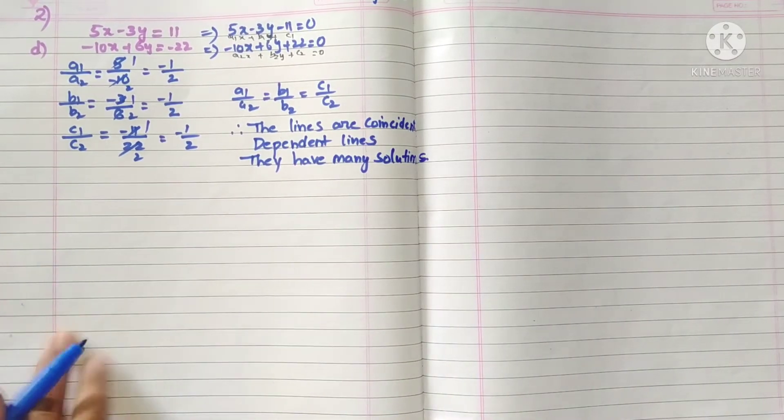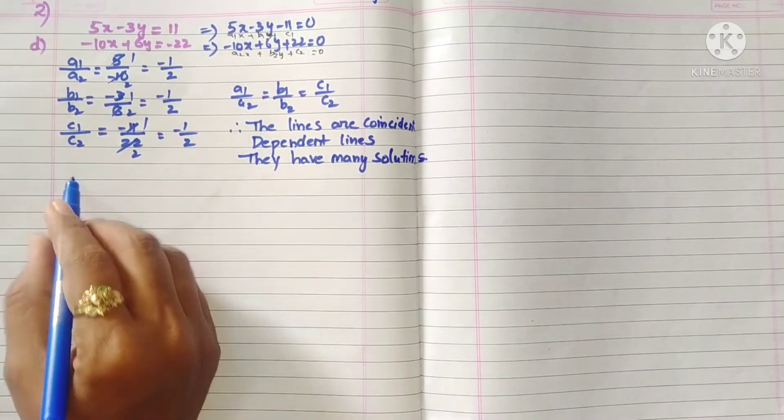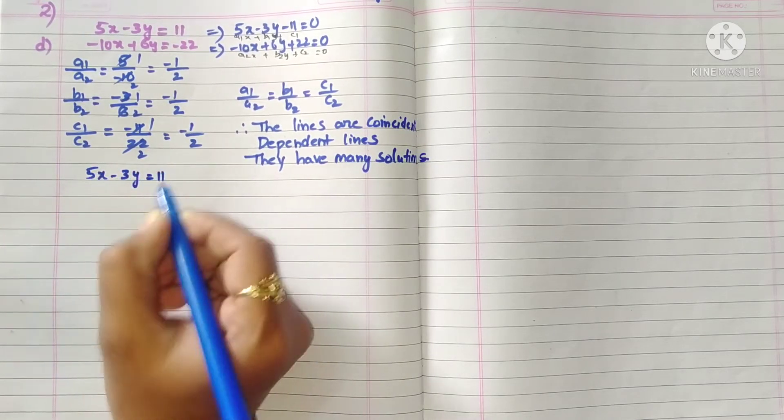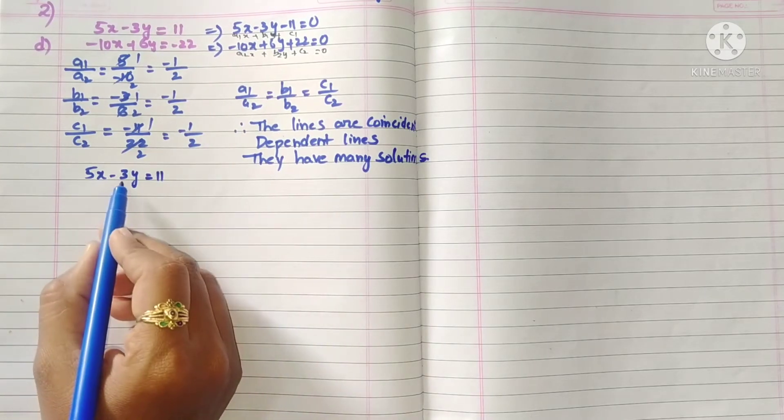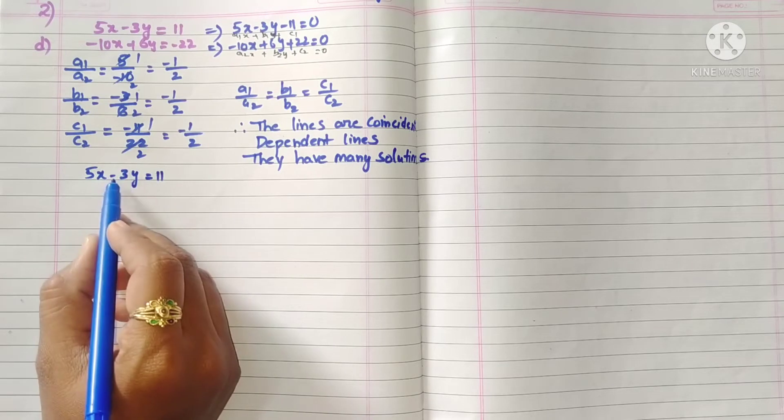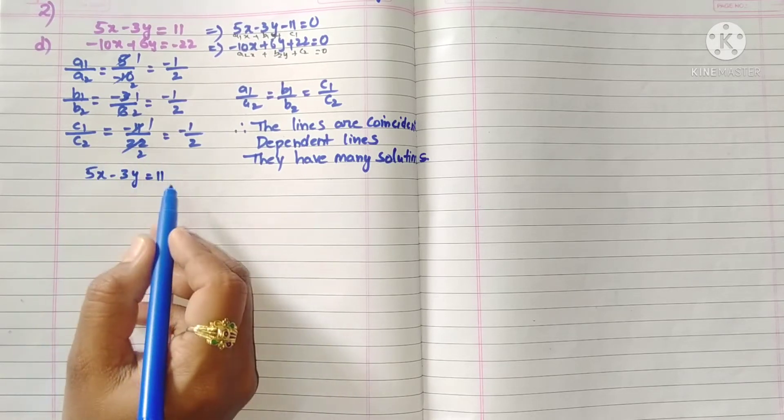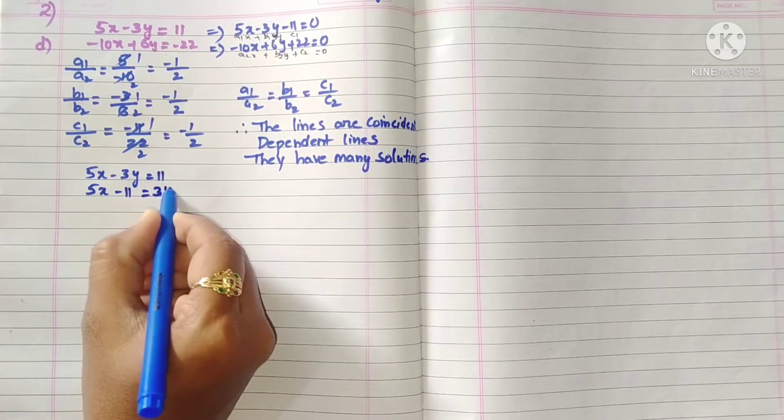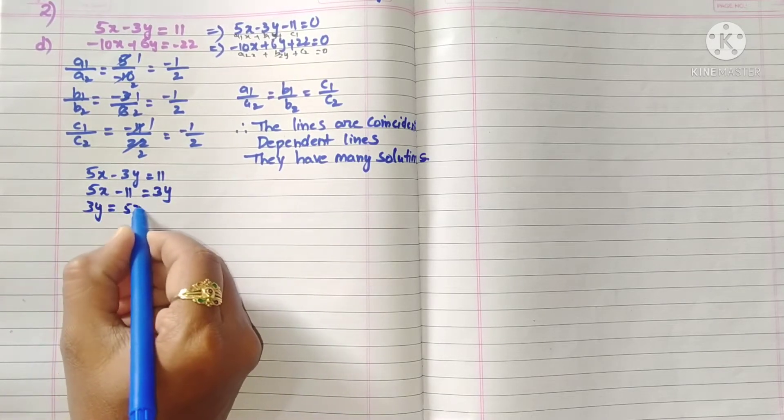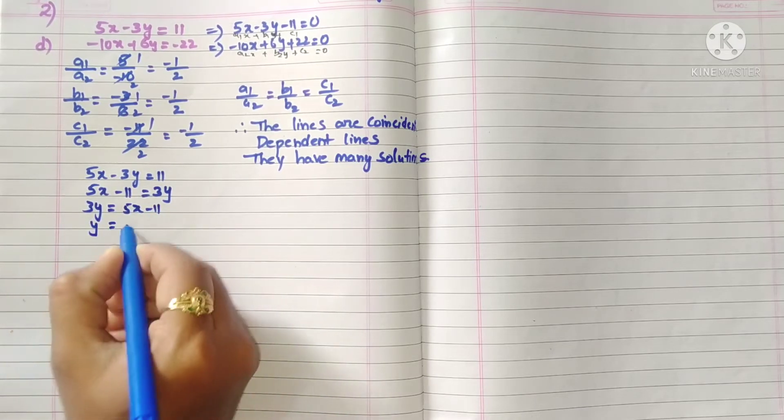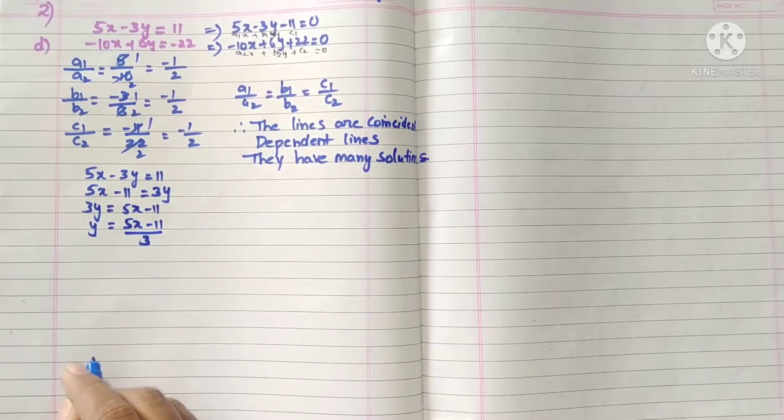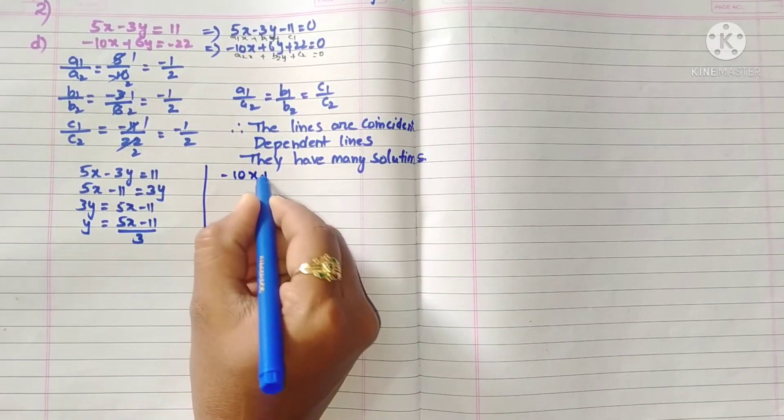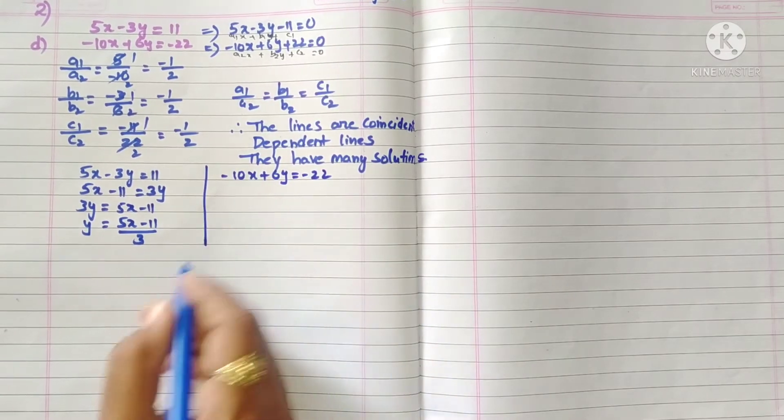Now we have to find the points. Write the first equation: 5x minus 3y equals 11. We want to find the value of y, so transpose 5x: minus 11 equals negative, so 3y equals 5x minus 11. Then y equals 5x minus 11 by 3.